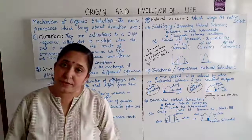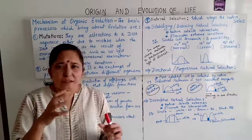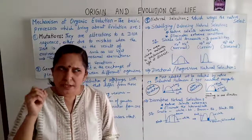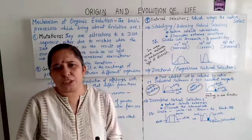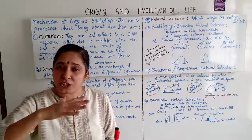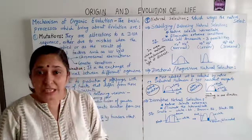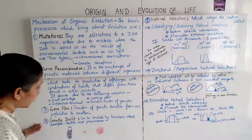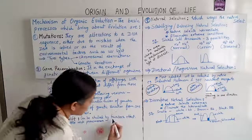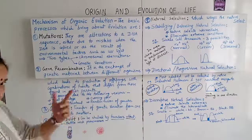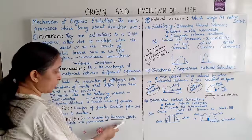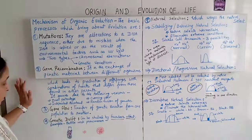Genetic drift is a random change or alteration in gene frequency that usually occurs in a small population by chance. Because of that random change in gene frequency, it is called genetic drift. Genetic drift can be studied through the founder's effect.